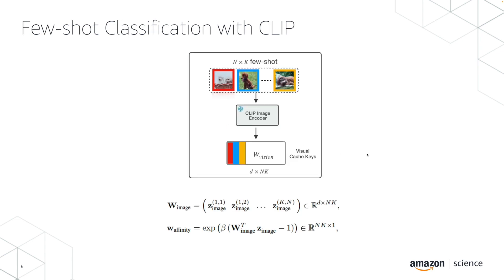A few-shot classification setup is different from zero-shot. In few-shot classification, in addition to just class labels, we are also provided with a few labeled images from the dataset. Here, N×K few-shot images are available, where K corresponds to the number of images available for each class. Similar to the textual cache, we can pre-compute embeddings for images and store them as a visual cache. This visual cache can also act as a classifier.